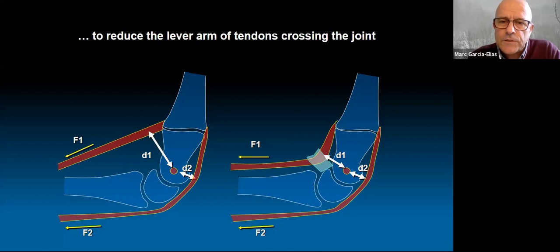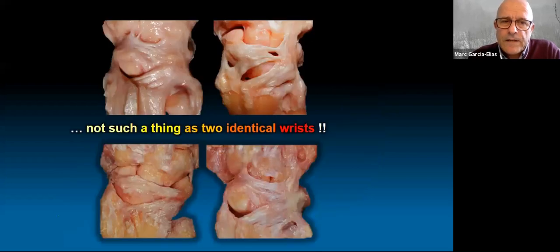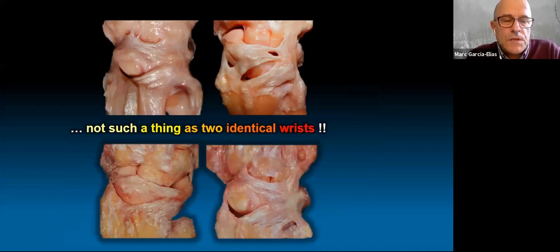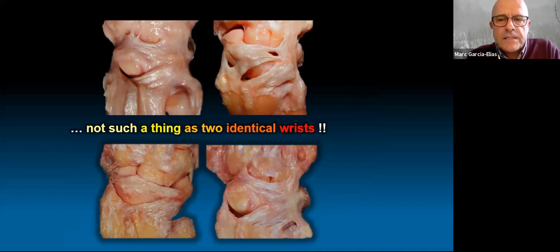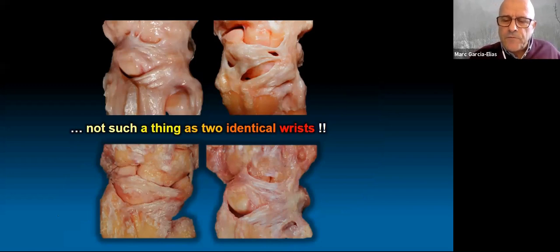Finally, in closing the anatomy section: we should all recognize there are no two identical wrists, just as there are no two identical trees or individuals. You dissect four wrists and none is completely equal to the other. So let's make a plea for tailoring our treatments to each individual case.